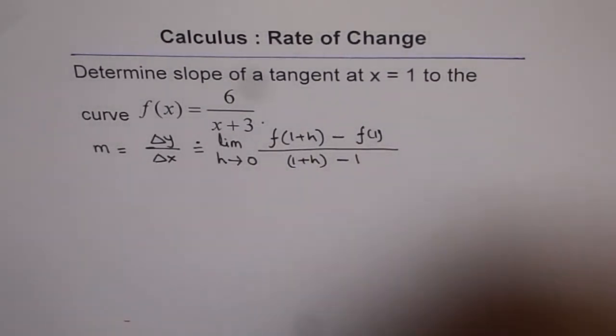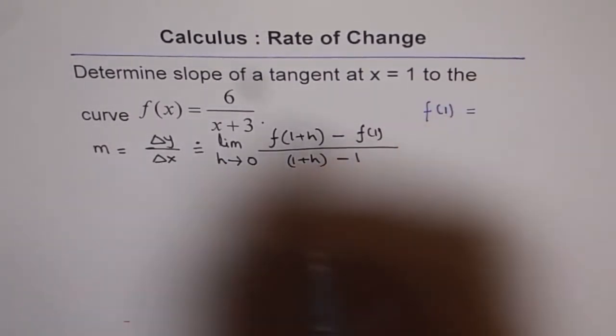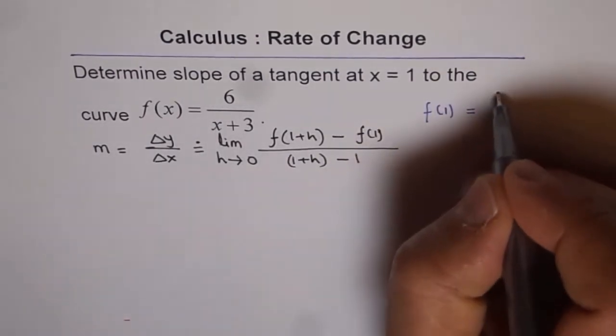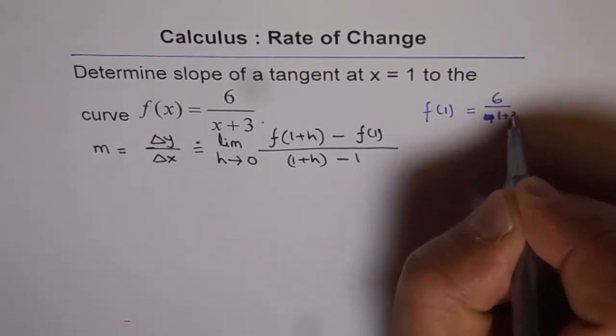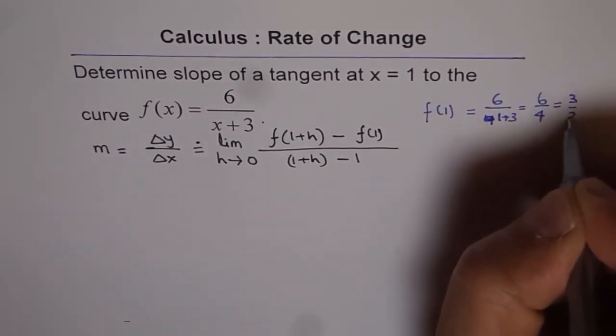Now, f(1), so, let me write here. f(1) will be value of this function at 1. So, it is 6 over, oh, sorry, 1+3. Let me write 1+3 and then I will write 6 over 4, right?